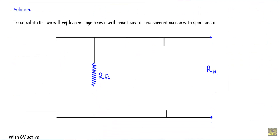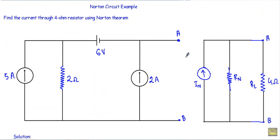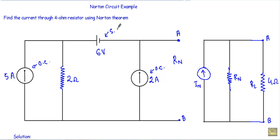First I will find out the Norton resistance. I have to calculate the Norton resistance with respect to the A and B terminals. When calculating Norton resistance, I will replace the current sources with open circuits and the voltage source with a short circuit. Both current sources will be replaced by open circuits.